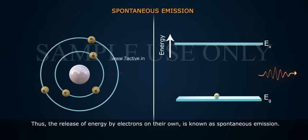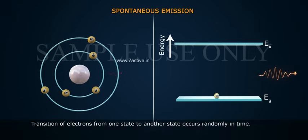Thus, the release of energy by electrons on their own is known as spontaneous emission. Transition of electrons from one state to another state occurs randomly in time.